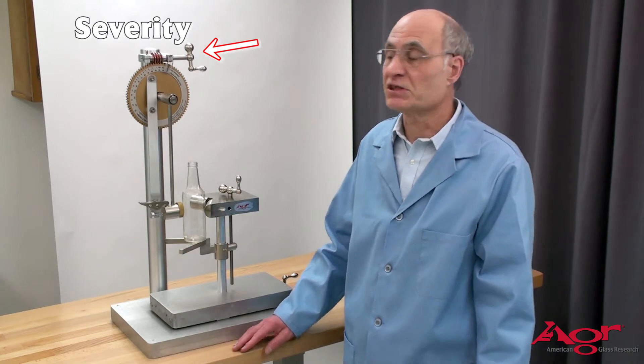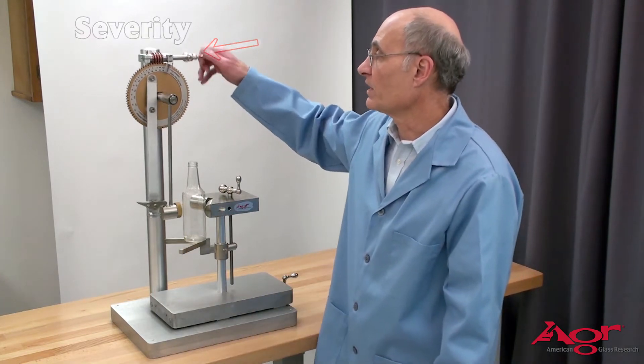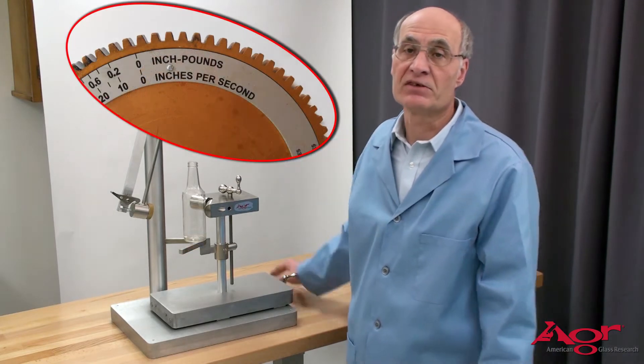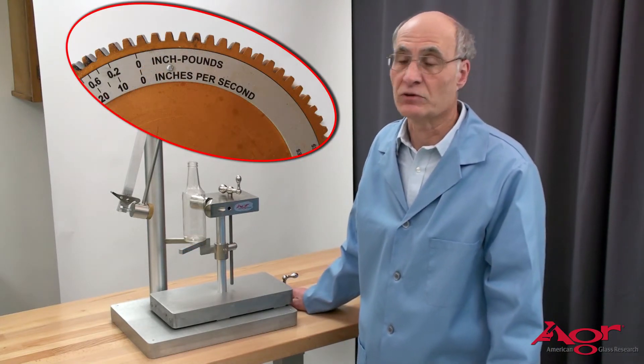The severity of the impact is judged by how far you crank the handle back. The scale is either in inches per second or energy units however you want to do it.